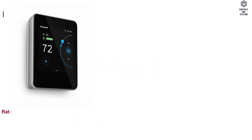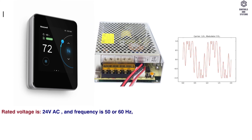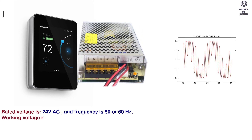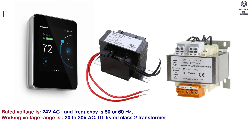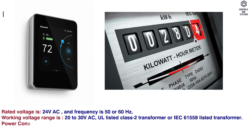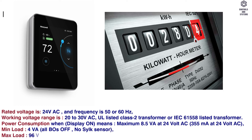Technical specifications — Power supply: Rated voltage is 24V AC at 50 or 60 Hz. Working voltage range is 20 to 30V AC, using a listed Class II transformer or IEC 61558 listed transformer. Power consumption with display on: maximum 8.5 VA at 24V AC, 355 milliamps at 24V AC. Minimum load: 4 VA with all outputs off and no SILK sensor. Maximum load: 96 VA with all outputs on.